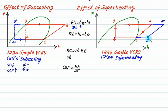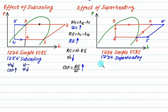With super-heating, the RE becomes h1-dash minus h4-dash, so RE also increases. For the same RC, the mass flow rate will decrease. The COP improves slightly, depending on the percentage increase in RE versus the percentage increase in compressor work — but in fact, the RE percentage increase is always more than the compressor work increase. Summary: compressor work increases, RE increases, mass flow rate decreases, and COP improves.